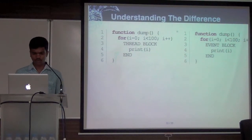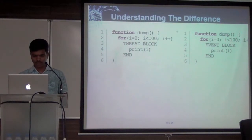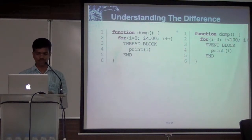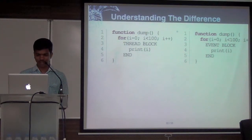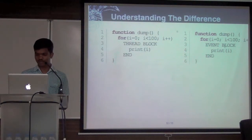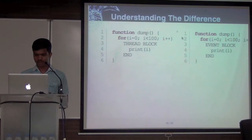Here I have two functions called 'dump'. The first version is printing i 100 times, but that block is inside a thread. JavaScript doesn't have threading, so there's some makeshift threading I've put in. You can think in terms of any other language. Here I'm doing the print of i in the event loop.